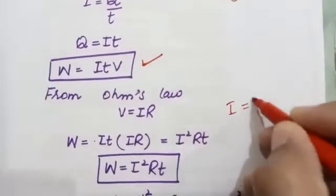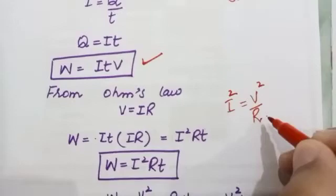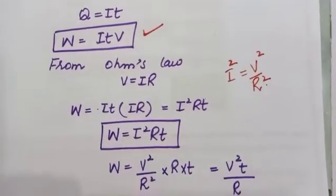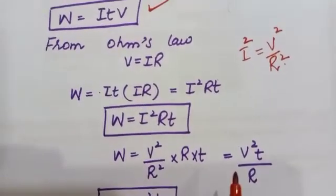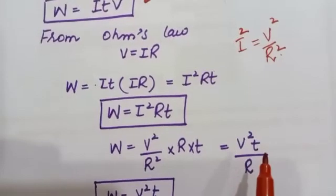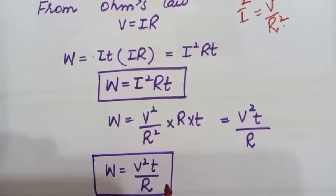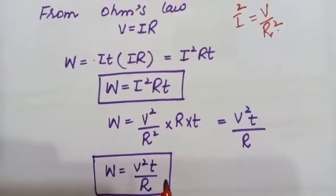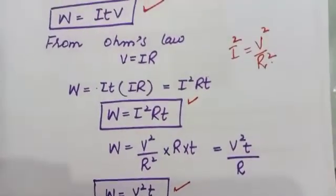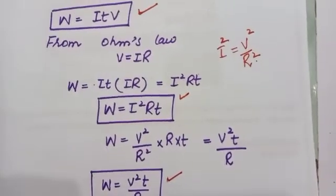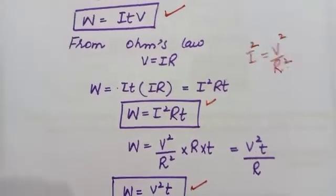We can also express it using Ohm's law: from V = IR, we get I = V/R. Substituting I² = V²/R² into W = I²Rt, the R in the denominator partially cancels, giving W = V²t/R. So the three mathematical forms to calculate electrical energy in a circuit are W = VIt, W = I²Rt, and W = V²t/R.